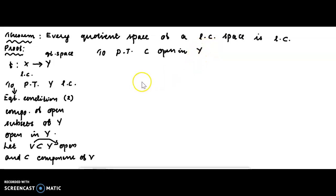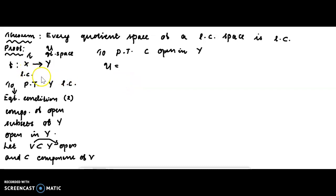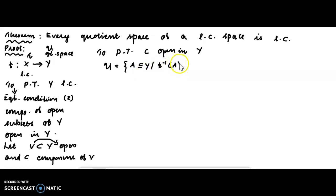Now, what is the Y topology? The topology on Y is U — the quotient topology. This is the strongest topology, the definition which makes each f continuous. The topology on Y is the set of all subsets U of Y such that f-inverse of U is in tau-X.